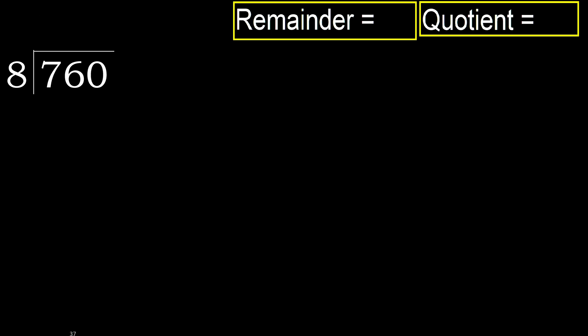760 divided by 8: 7 is less than 8, therefore take the next digits — 76. 76 is not less than 8, so we work with 76. 8 multiplied by which number is nearest to 76 but not greater? 8 multiplied by 9 is 72, which is not greater. Subtract: 76 minus 72 is 4.